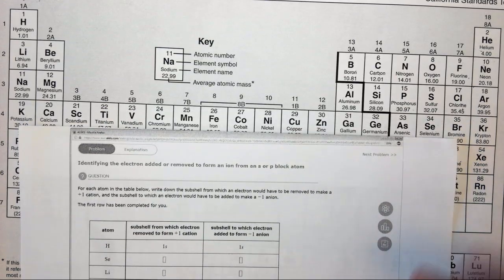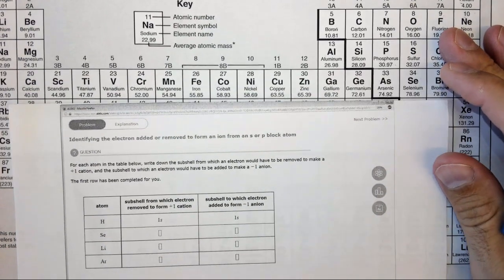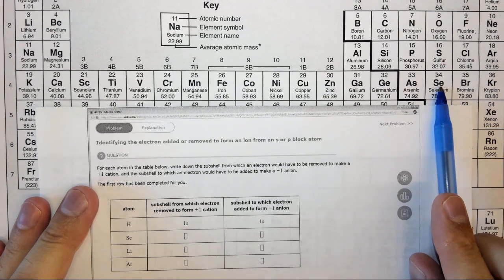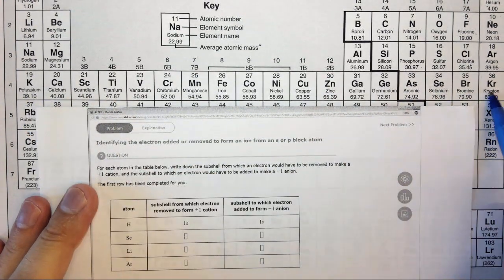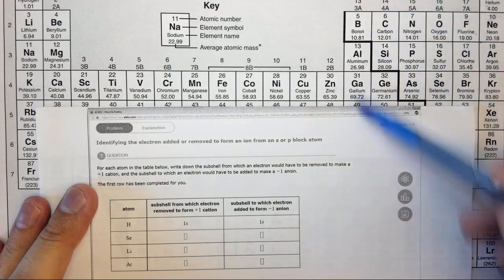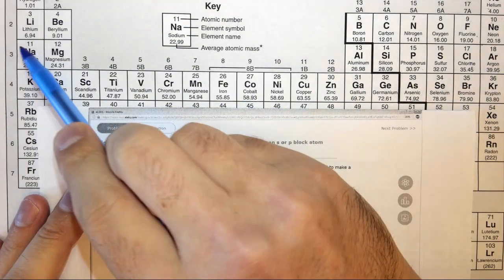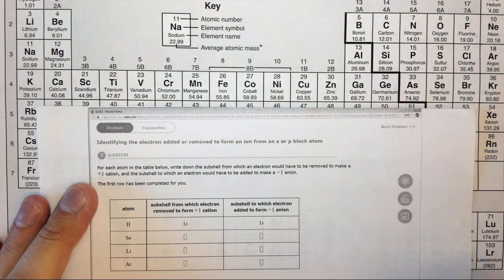So the first one is selenium, which is right here. In selenium the outermost electrons are in the 4p orbital because this is the p block, and there are several other videos on this playlist where we talk about the s block, the p block, the d block, and so on.